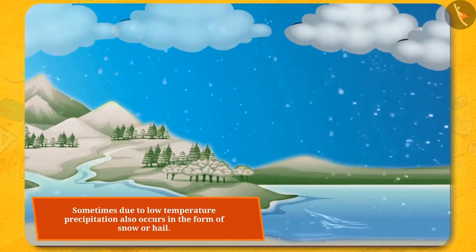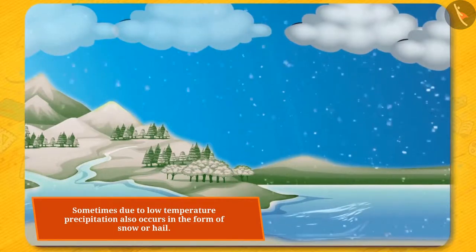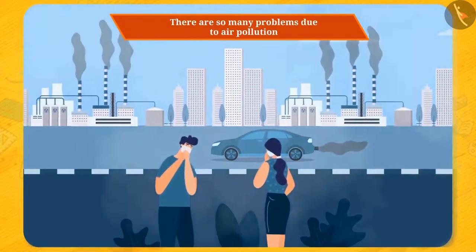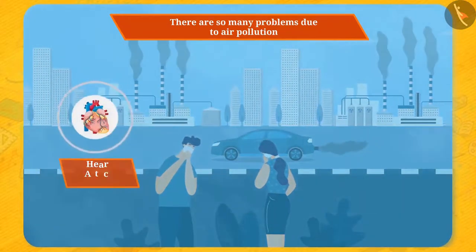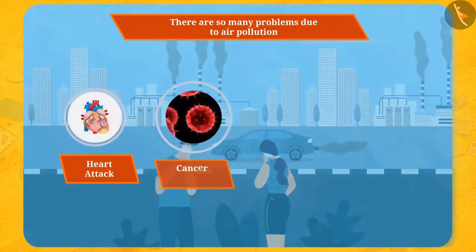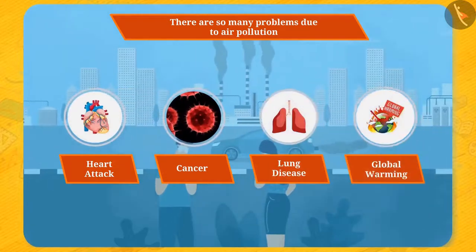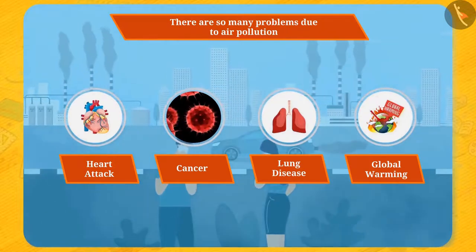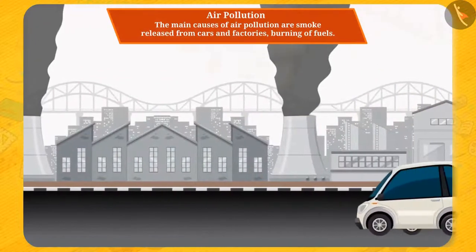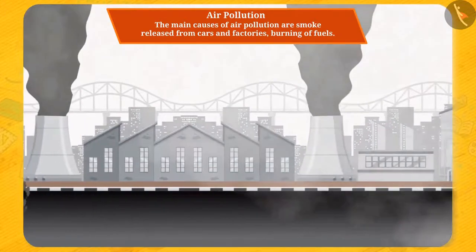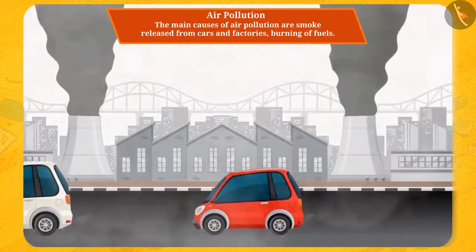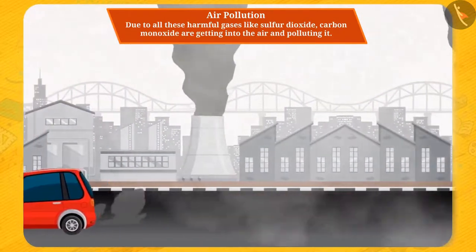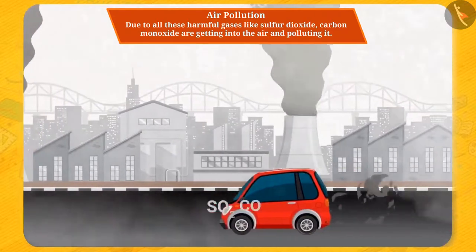There is no doubt air is very important for us, but what will happen if it gets polluted? There are so many problems due to air pollution, like heart attack, cancer, lung disease, global warming, etc. The main causes of air pollution are smoke released from cars and factories and burning of fuels. Due to all these, harmful gases like sulfur dioxide and carbon monoxide are getting into the air and polluting it.